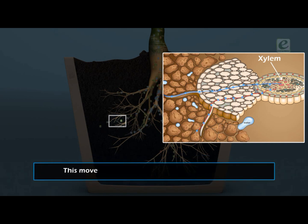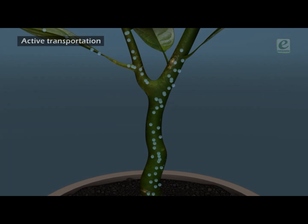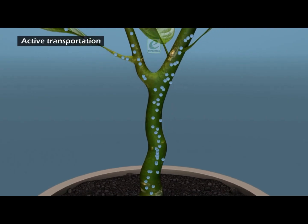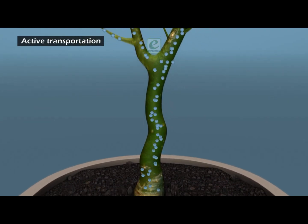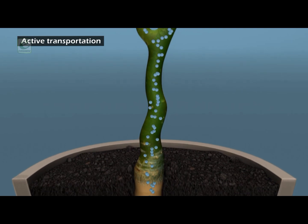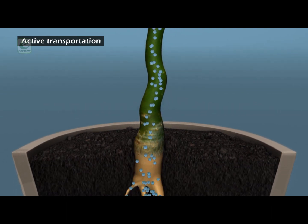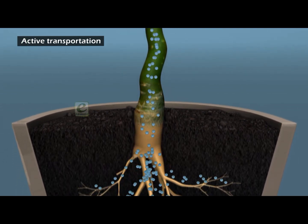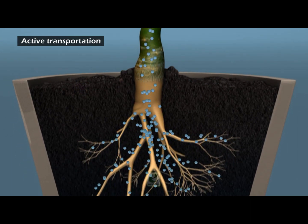This movement of sap is brought about by two ways. First, active transportation under suction pressure gradient or diffusion pressure deficit (DPD), which is the force with which water diffuses into a cell.